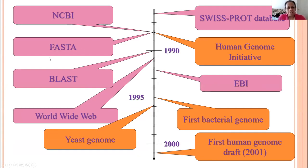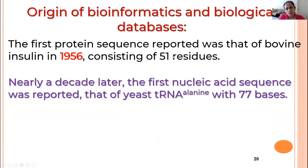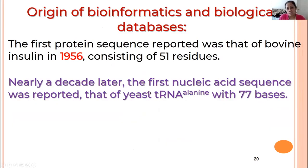Then we started seeing all of these tools being developed. You can pay attention here — the whole genome project initiative was actually started in the 80s. The first protein sequence reported was that of insulin in 1956, consisting of only 51 amino acids. Then nearly a decade later, the first nucleic acid sequence was reported. There was also a faculty at Georgetown — Jack Chirikian — who passed away two years ago. He was the first person to actually sequence a tRNA when he was at Princeton.